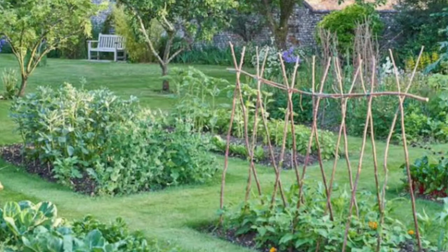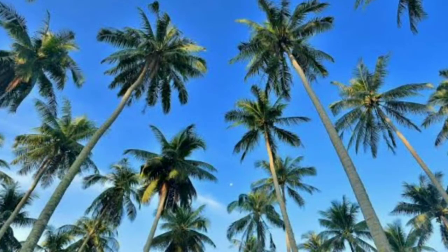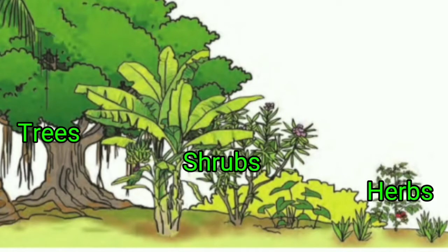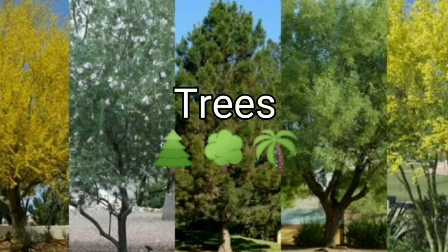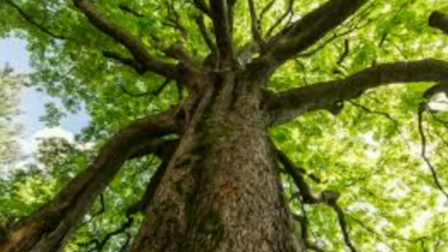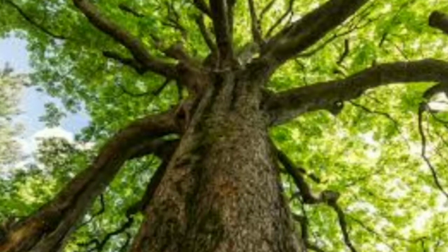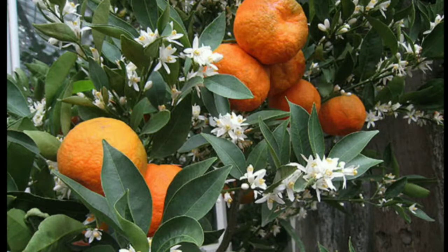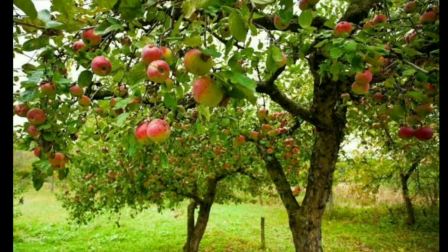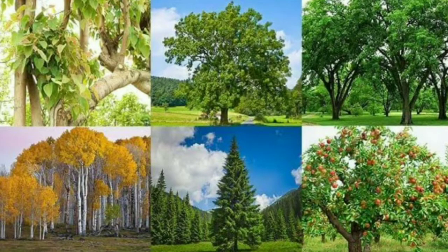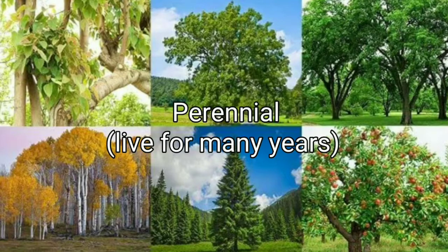According to the size and height of their stems, plants can be classified into three types: trees, shrubs, and herbs. Some plants grow tall — their stem or trunk is hard and strong, and they have branches at some height above the ground. They bear flowers and fruit for many years. Such plants are called trees. Trees are tall, big, and perennial — that is, they live for many years.